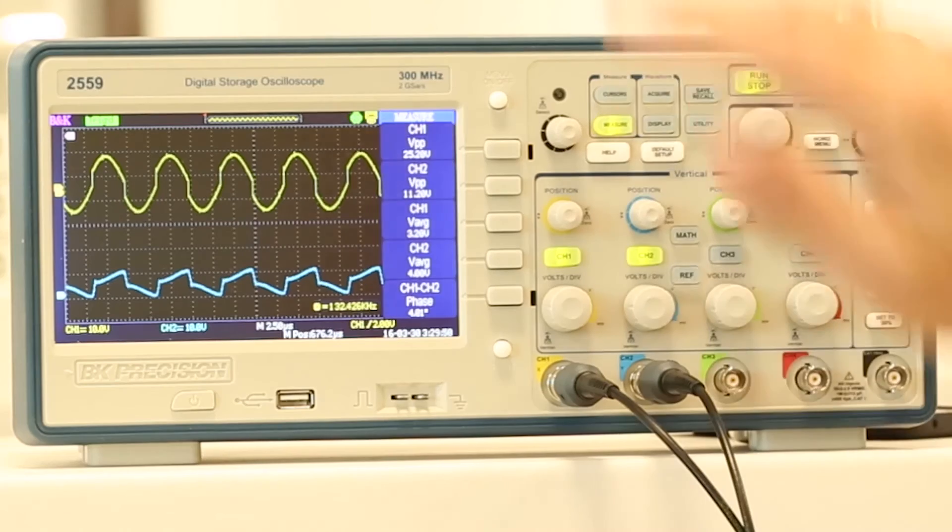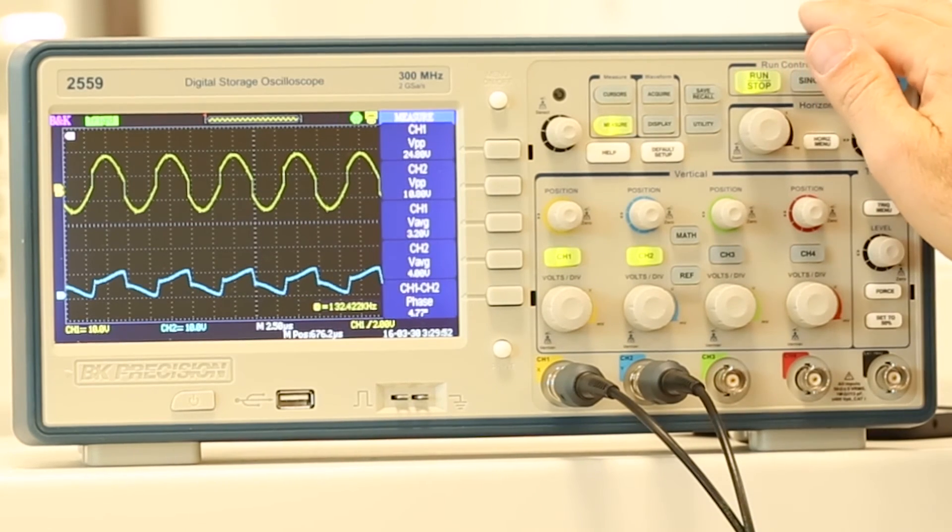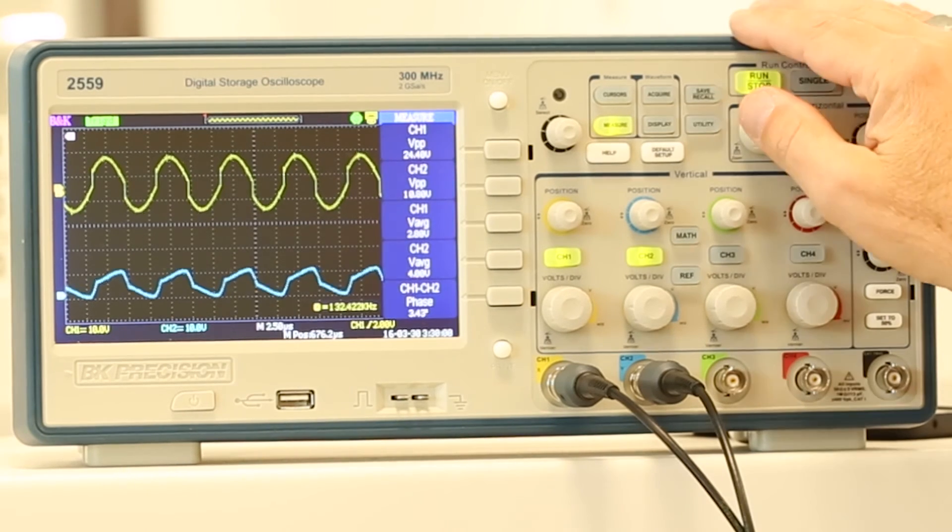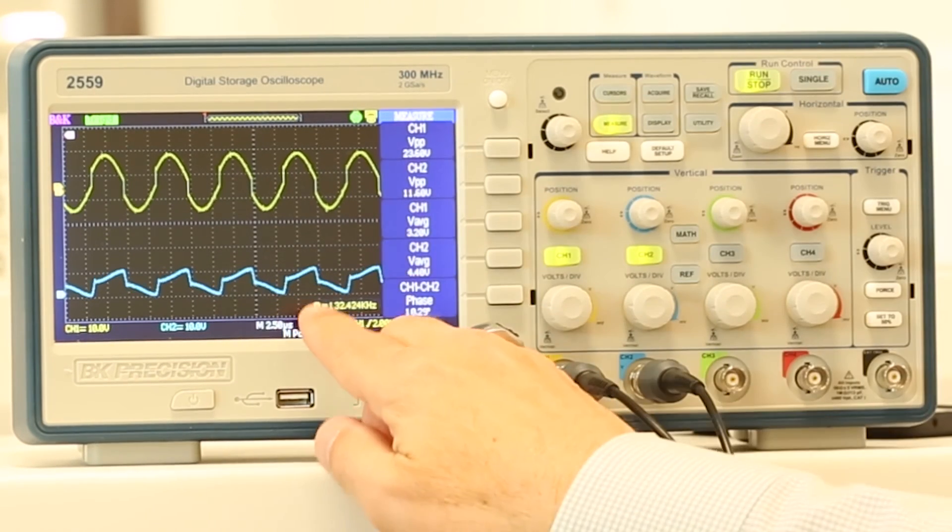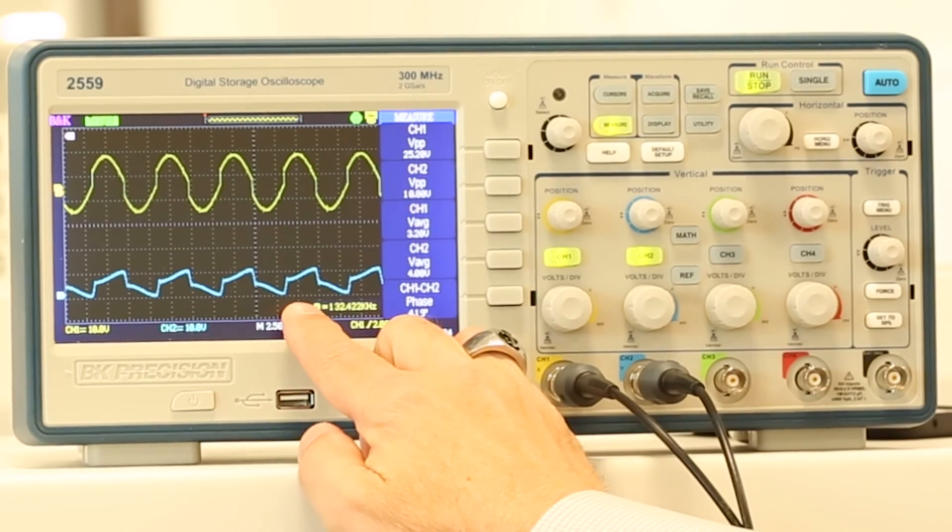Now let's look at the scope. The upper trace shows the transmitted voltage waveform. The lower trace shows the received voltage. Scope is set to 10 volts per division for both channels. As you can see, the voltage peak to peak on the received power is about 10 volts.